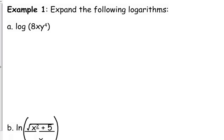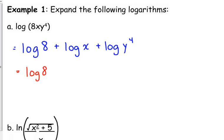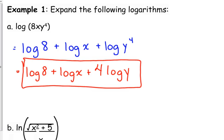Example 1 says expand the following logarithms. If we have the log of 8 times xy to the 4th, then that's the log of a product. We can expand that into the log of 8 plus the log of x plus the log of y to the 4th. And then if we're expanding, that also means we don't want to have exponents. So we can take this one step further. I'm not going to evaluate the log of 8, I'm just going to leave that in that form. But I am going to use my power rule to bring down that power of 4 in front. That 4th power is only on the y, it's not on the whole thing.